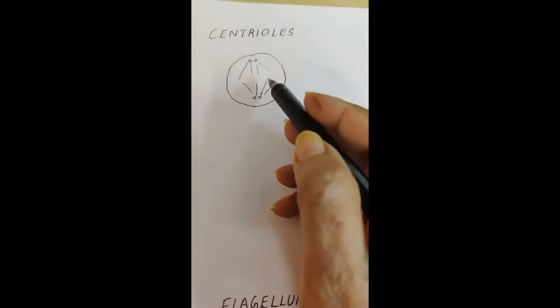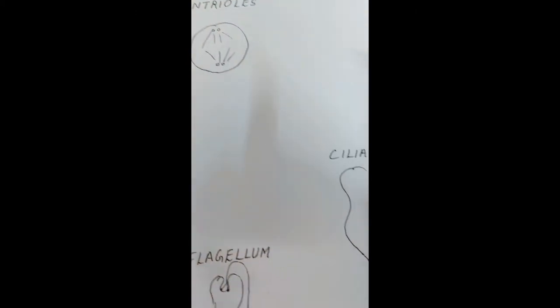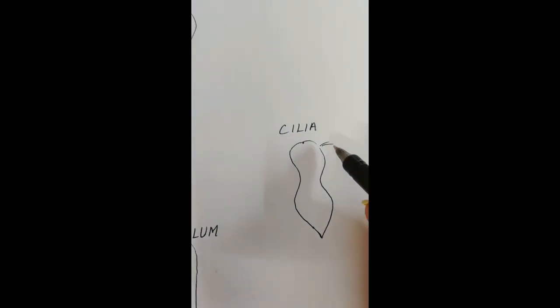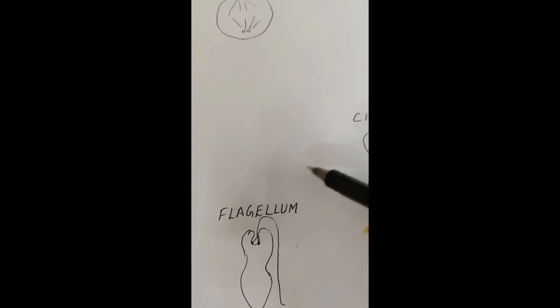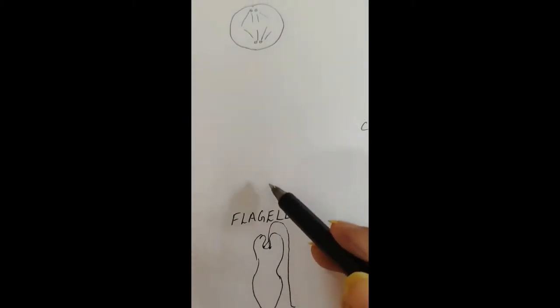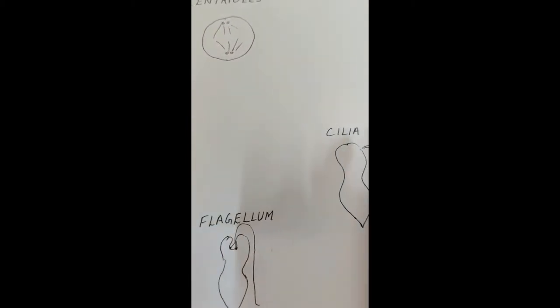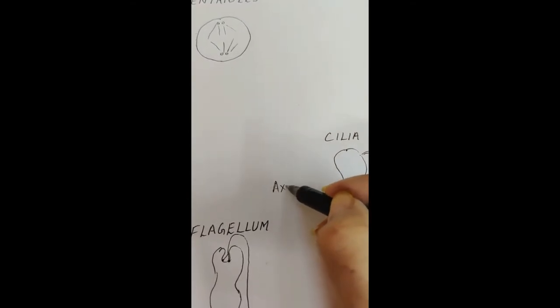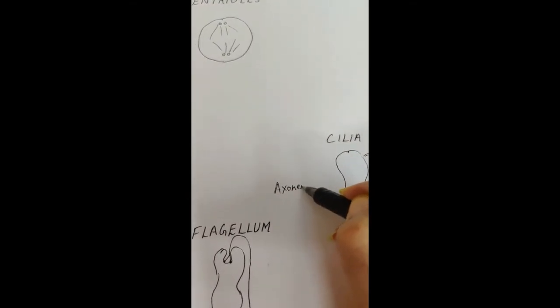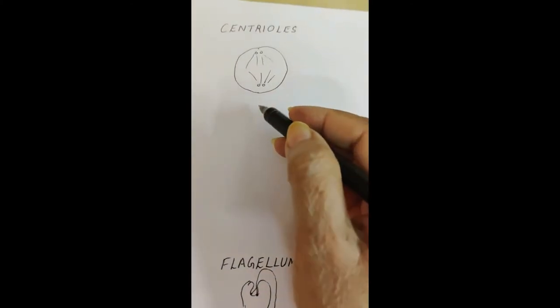So basal granules and the centrioles and the basal granules giving rise to the cilia are all the same thing, and the organization of flagellum cilia, the axoneme part, is also done by the centrioles.